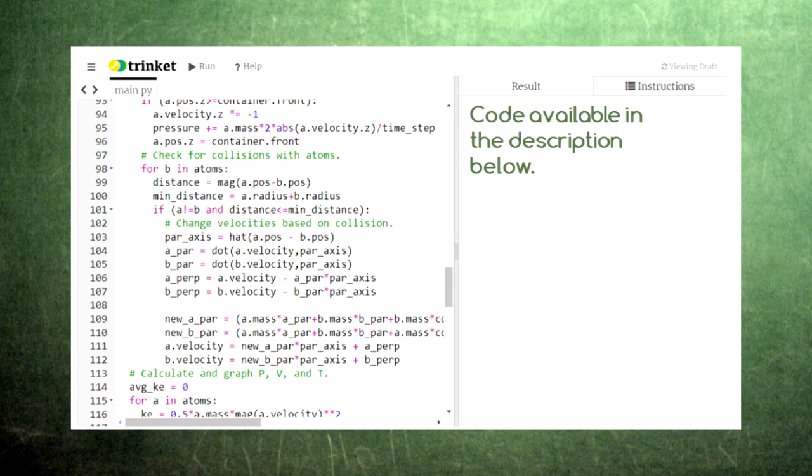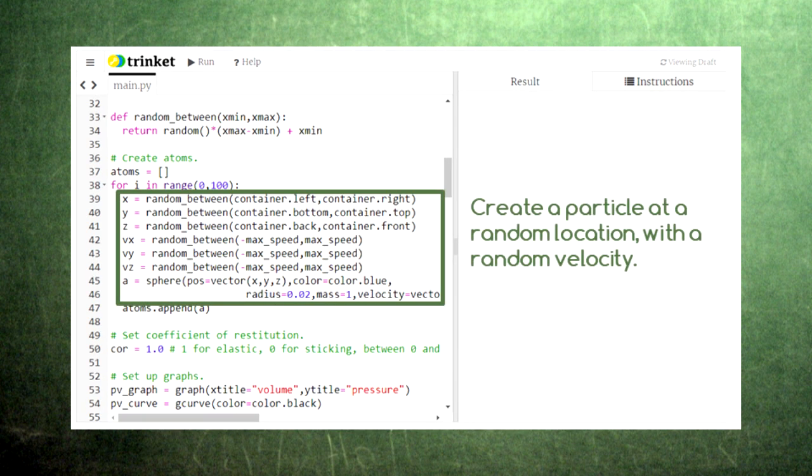In this code, we'll use a lot of what we've learned in previous episodes to animate the particles that make up a gas. Here we create each particle and use a random number generator to give each particle a different position and a different velocity. To learn more about random numbers, see the video linked in the description below. Notice that for the first time in this series, we're using all three dimensions, x, y, and z.